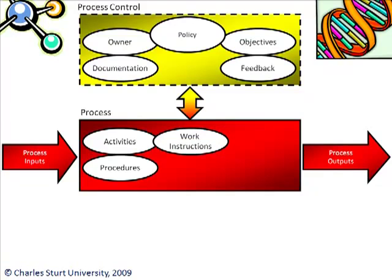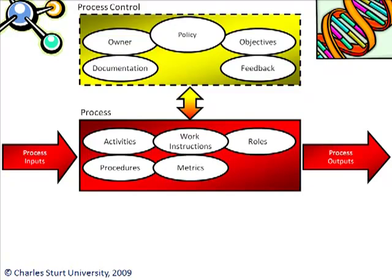If you look at a specific activity or part of a specific activity and describe in detail how things are going to work, then we're talking about a work instruction. A work instruction is about how you're doing activities. A role is nothing more and nothing less than a set of activities you assign to someone — making someone responsible to perform one or more activities, so it's clear who's doing what. Metrics allow you to actually measure the performance, efficiency, and effectiveness of your own process.